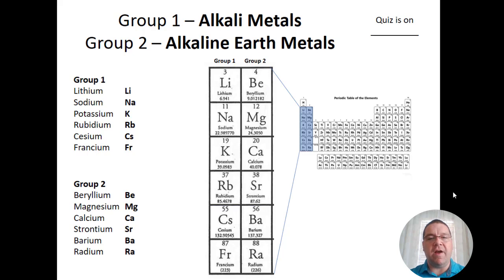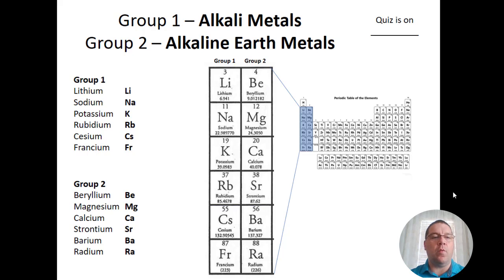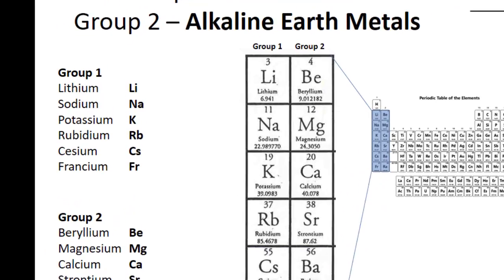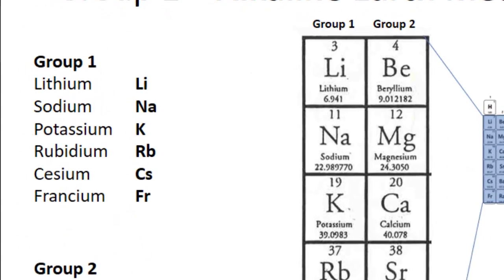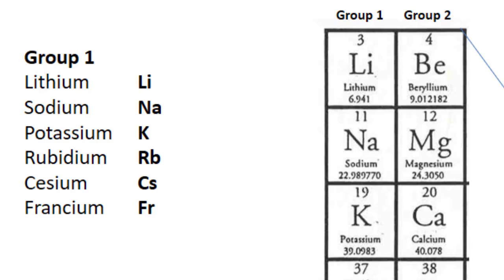What you'll find with the element symbols and their names is that there's usually a pretty easy correlation between what letters are used in the symbol and what letters are used in the name, though not always. We see a couple of examples of this even in the Group 1 elements. Starting with Group 1 at the top, we have lithium, Li — easy enough to see where the Li comes from.